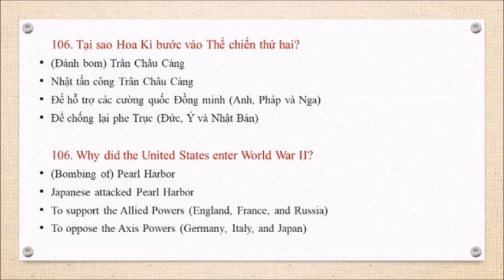Question 106: Why did the United States enter World War II? Bombing of Pearl Harbor. Japan attacked Pearl Harbor. To support the Allied Powers — England, France, and Russia. To oppose the Axis Powers — Germany, Italy, and Japan.